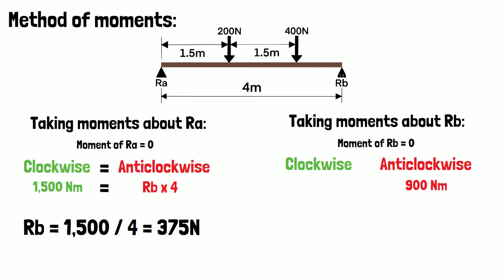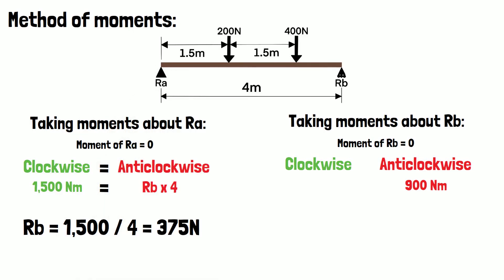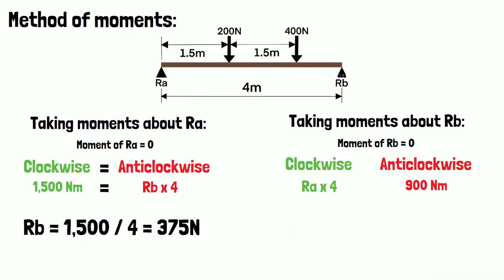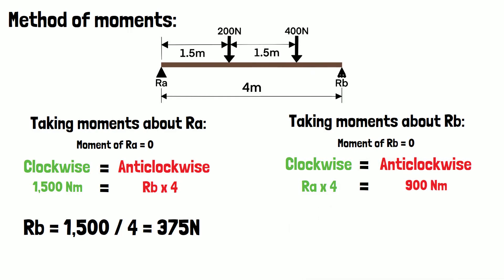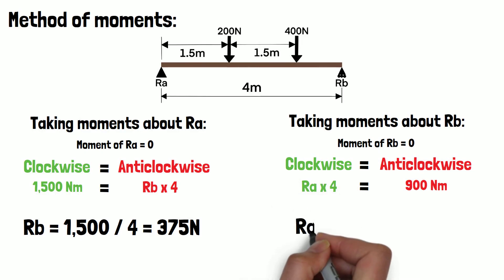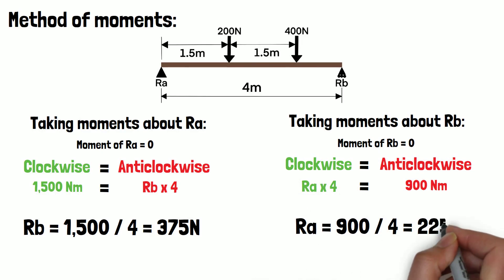In the clockwise direction the only moment we have is the support reaction RA at a distance of 4 meters. Since the beam is in equilibrium and the clockwise moments equal the anti-clockwise moments, we can again transpose this equation to find RA by dividing 900 by 4, which gives us 225 newtons.